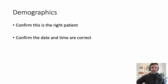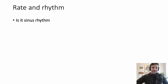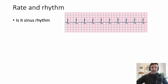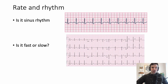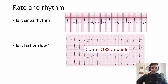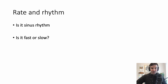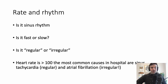Demographics: double check — is this the right patient? Is this today's date and time? I've made this mistake too many times to count. Next up, rate and rhythm. Is it sinus rhythm? In general, it's sinus rhythm if you have a P wave before every QRS and a QRS after every P wave. Then ask yourself: is it fast or is it slow? You can count up the QRS segments — this ECG was taken over a 10-second period, so count the QRS segments in the bottom lead, multiply by six, and that's the heart rate. Then go a step further: not only is it fast or slow, but is it regular or irregular? A really useful tip: if the heart rate is above 100 in inpatients, it's almost always sinus tachycardia or atrial fibrillation.